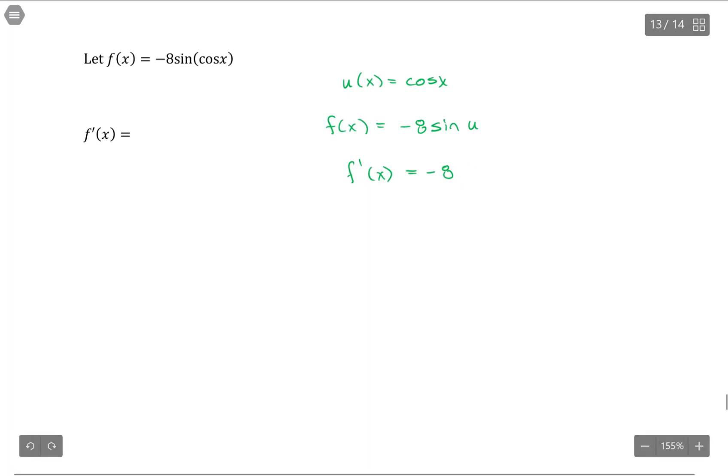We take the derivative of the outside function. So the derivative of sine is cosine. We leave the inside function alone and then multiply by the derivative of the inside function. So this is kind of charting what I need to actually do when I find the derivative.